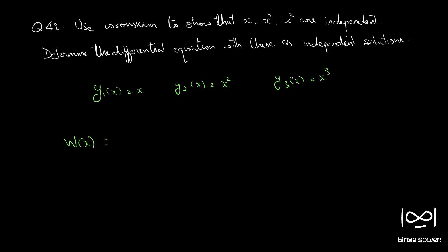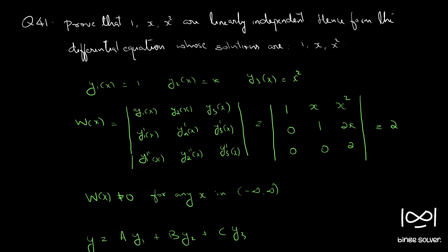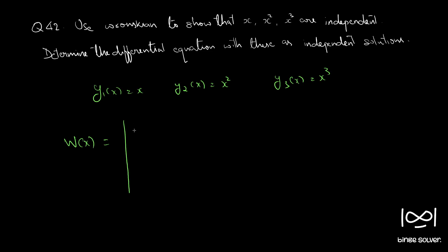The Wronskian in this case: the first row is x, x², x³; the second row (first derivatives) is 1, 2x, 3x²; and the third row (second derivatives) is 0, 2, 6x.